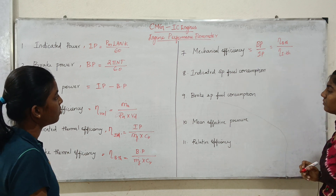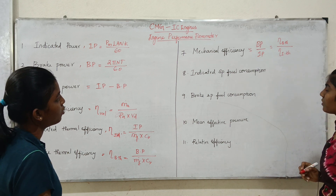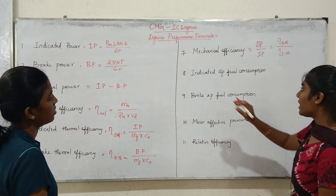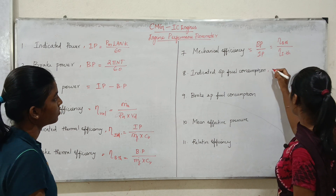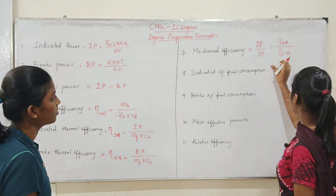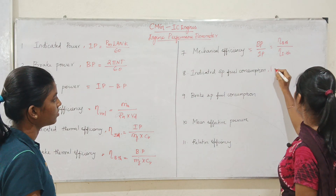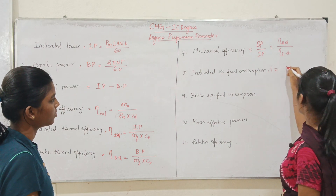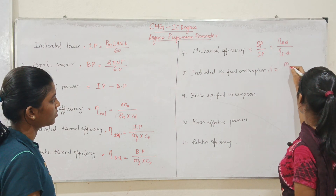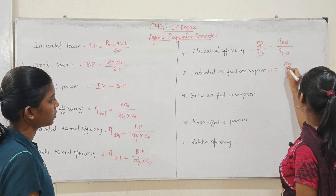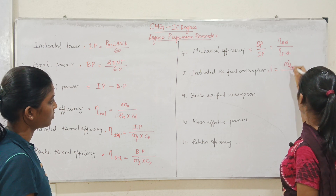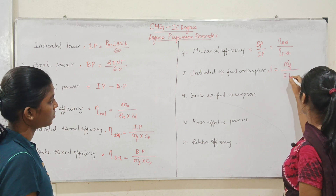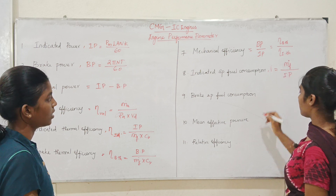Next, Indicated Specific Fuel Consumption. Indicated specific fuel consumption is equal to m_f_dot divided by IP, that is mass flow rate of fuel divided by indicated power.